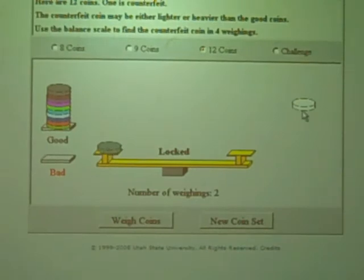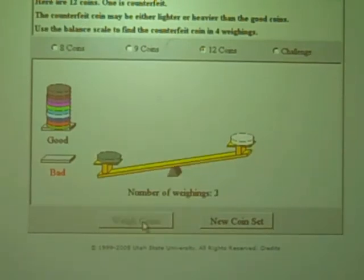So here we have either the white one or the gray one is either heavier or lighter than the other coins. So let's weigh. It looks like one of them is heavier or one of them is lighter, but we don't know which one is counterfeit.